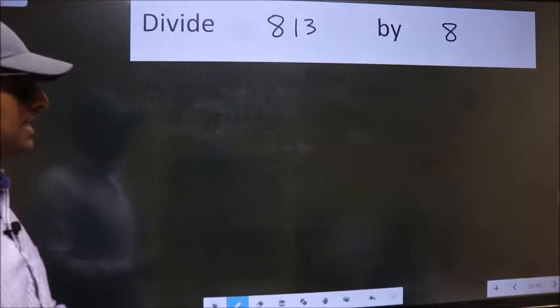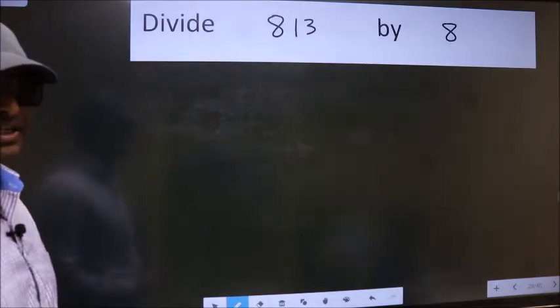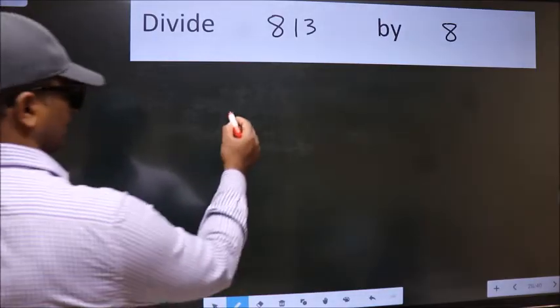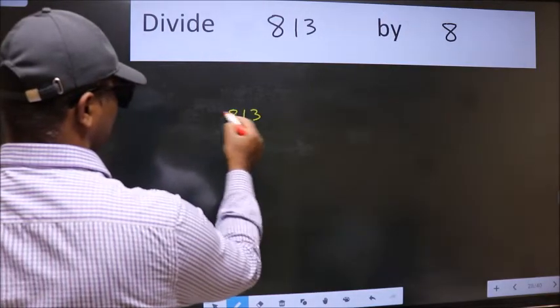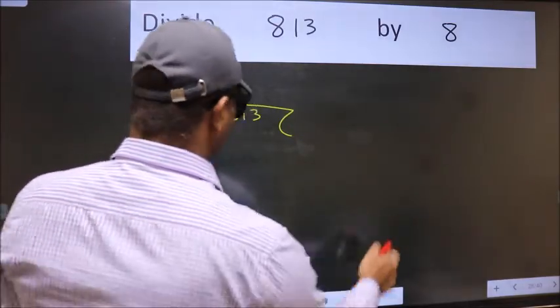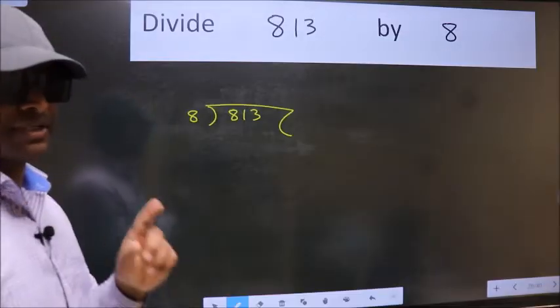Divide 813 by 8. To do this division, we should frame it in this way: 813 here, 8 here. This is your step 1.